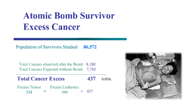Most, if not all, of the survivors of the atomic bomb in Japan in World War II are now deceased. But let's take a look at this population. Actually, 86,572 people survived the atomic bomb. The total cancers observed after the bomb was 8,180. The total cancers you'd expect without the ionizing radiation from the bomb would be 7,743. So there was an increase in this total population of 86,572 people from exposure to ionizing radiation of only 437 persons, or 0.05 percent.